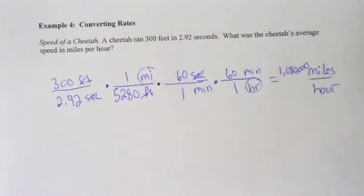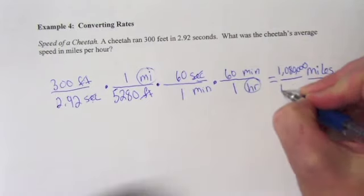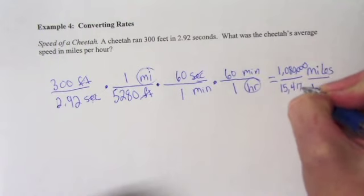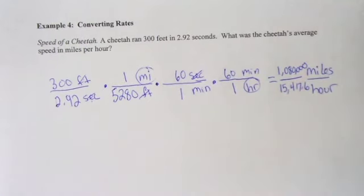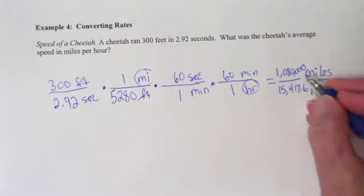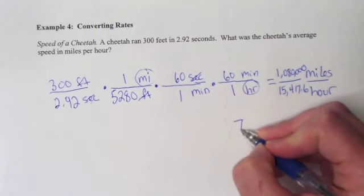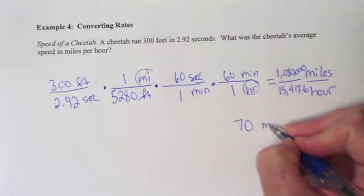And then on the bottom we have 5,280 times 2.92. So we get 15,417.6, and then we divide those two numbers. So we get approximately, when we divide these numbers, we get about 70 miles per hour.